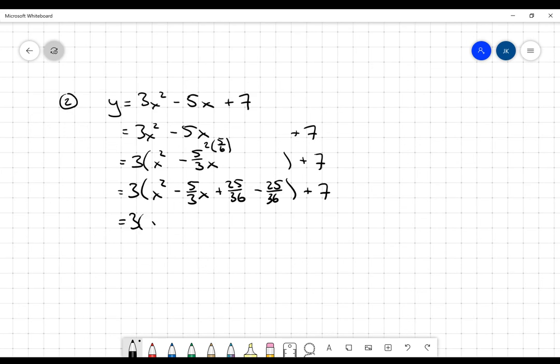The next thing I'll do is take that negative term out by multiplying by three. So it's negative 25 over 12 when I multiply by three.